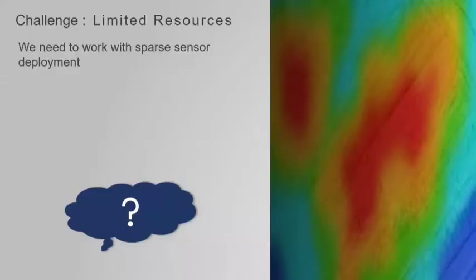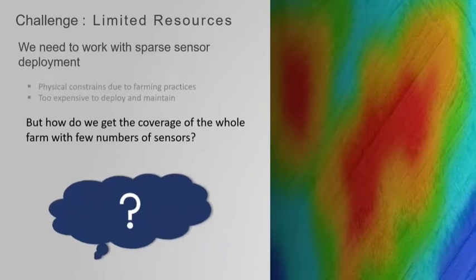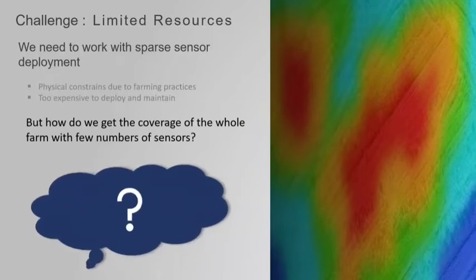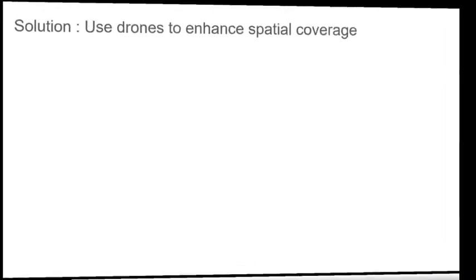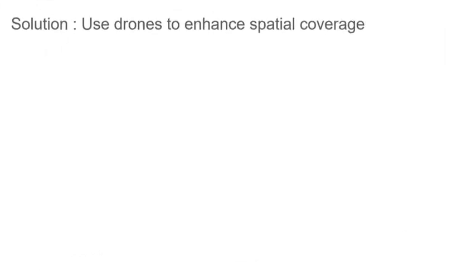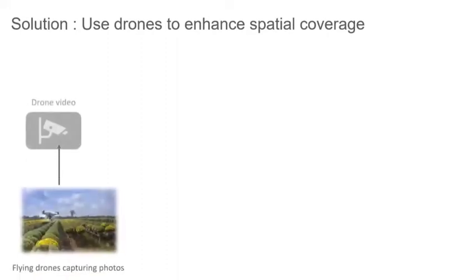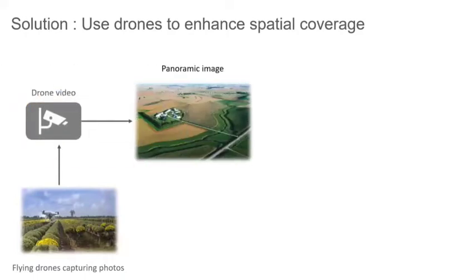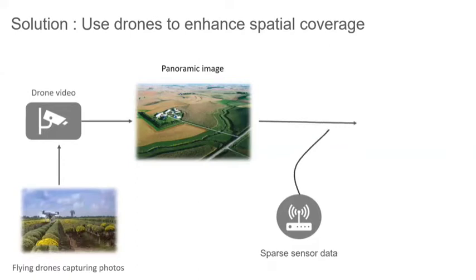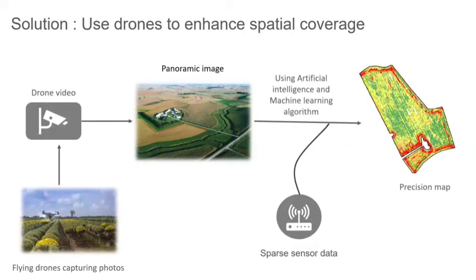The second challenge is limited resources. To build a precise map, we would need sensors every 10 meters, which are too costly. So the question is how to get coverage of the whole farm with few sensors. The solution is drones — we use UAVs with cameras on the bottom. The drone flies and captures panoramic images, then we use sensor data and interpolate using AI and machine learning algorithms to make a precision map.